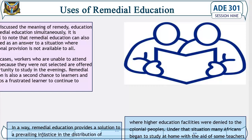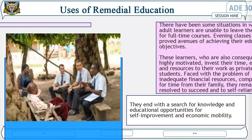Under the colonial situation, many Africans began to study at home with the aid of teachers and subsequently attempted the examinations of the University of London. There were situations in which adult learners were unable to leave their jobs for full-time courses; evening classes proved avenues for achieving their educational objectives. Learners who were highly motivated invested their time, energy, and resources as private students. Faced with inadequate financial resources and competition for time from their families, they remained resolved to succeed through self-reliance, seeking knowledge and educational opportunities for self-improvement and economic mobility.